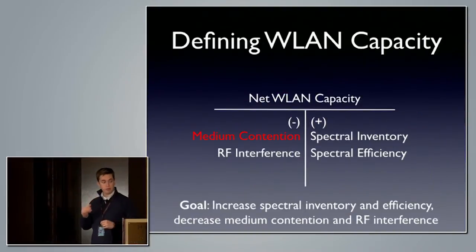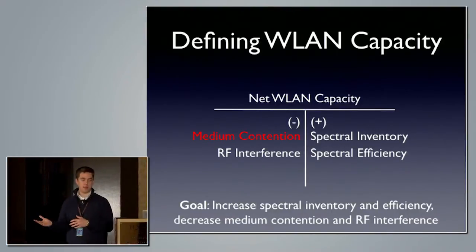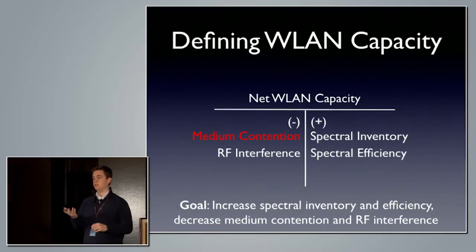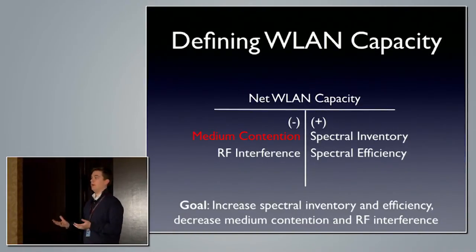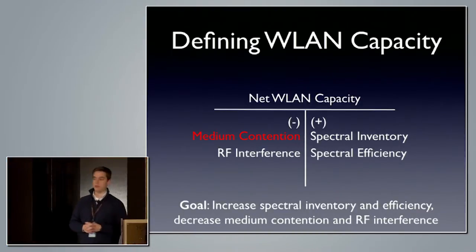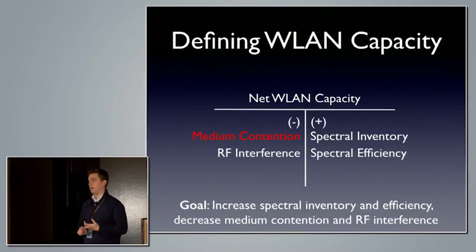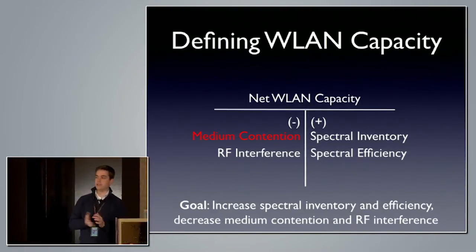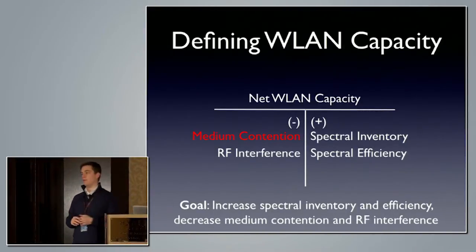The main drivers — the knobs we can tweak to play with wireless network capacity — on the positive side: we can add more spectrum to our inventory. The more spectrum we have, the more contention domains we have, the more clients we can segment into smaller groups, and the aggregate capacity of our network increases. We can also improve through spectral efficiency — higher signal quality to clients so they can use higher data rates, as well as clients that support multiple spatial streams to transmit data in parallel. RF interference is another factor. But the one I want to focus on today is medium contention.